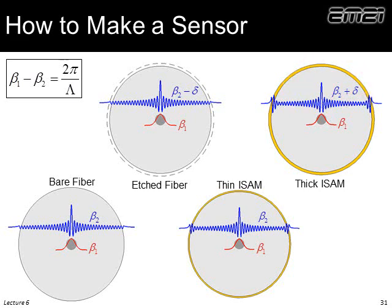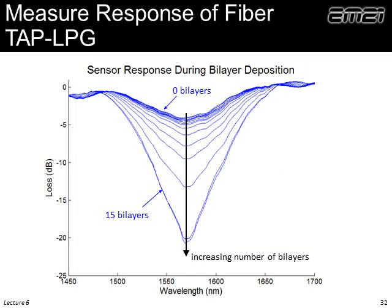We can track this while it's being deposited. If we choose our grating period to be at the turnaround point, the response of the fiber as we deposit more and more layers shows this dip getting stronger and stronger, because we're better and better matching that phase condition and spilling energy into the surrounding cladding. Once we couple into a cladding mode, the fiber doesn't really support those well and they end up scattering and leaking out of the guide, giving us a nice dip response.